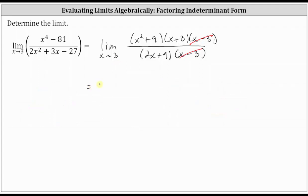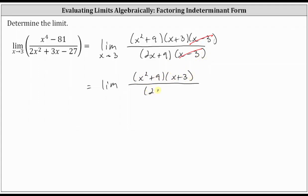The given limit equals the limit of the rational function where the numerator has factors x squared plus nine and x plus three, and the denominator has the factor two x plus nine, as x approaches three. Notice there is no longer a discontinuity at x equals three, and therefore we can evaluate the limit by performing direct substitution.